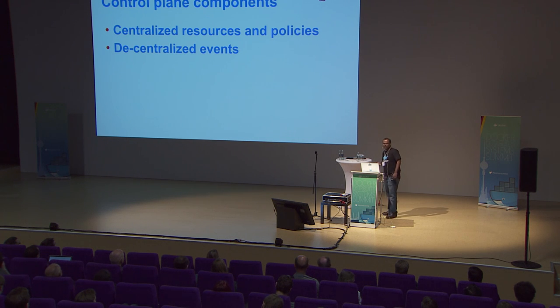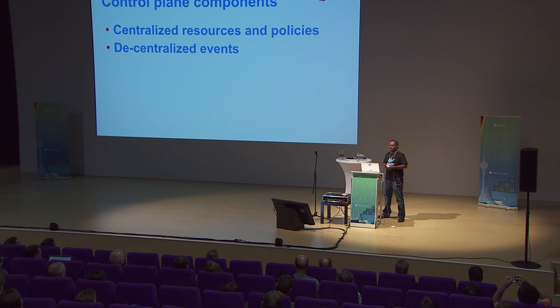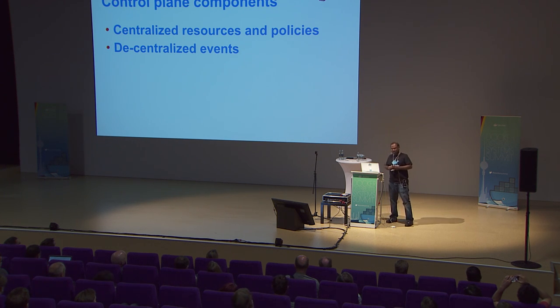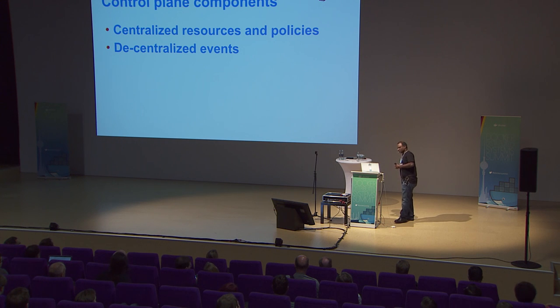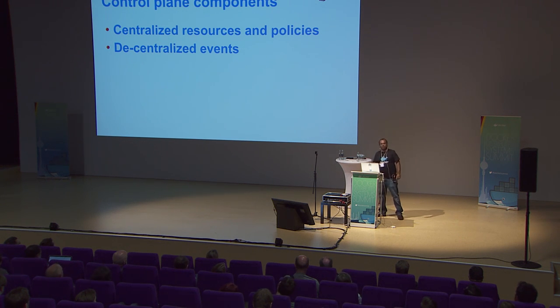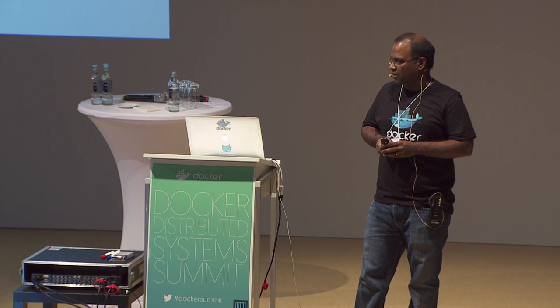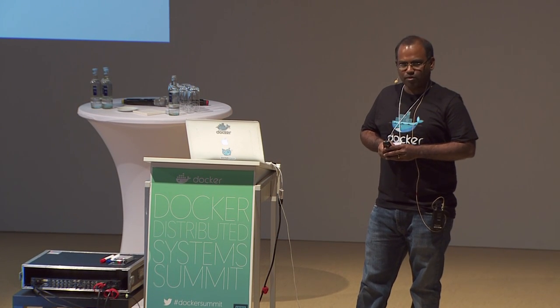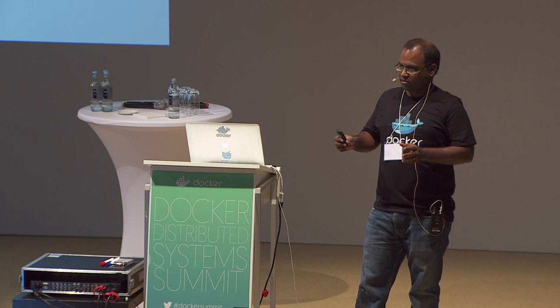Control plane components — there are a couple of different things that make up the network control plane. We have some things that happen in a centralized manner: resource and policy definition. When I say policy definition, I'm really talking about networks, because in Docker each and every network is actually a policy. All definitions of networks and allocations of resources happen in a centralized manner in the managers. And then we have a completely peer-to-peer, decentralized, gossip-based state dissemination between all nodes in the Swarm cluster, used for eventual consistent state dissemination.